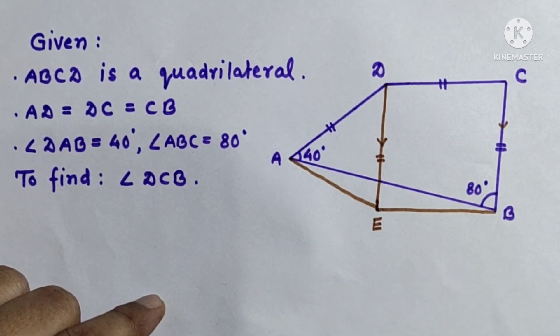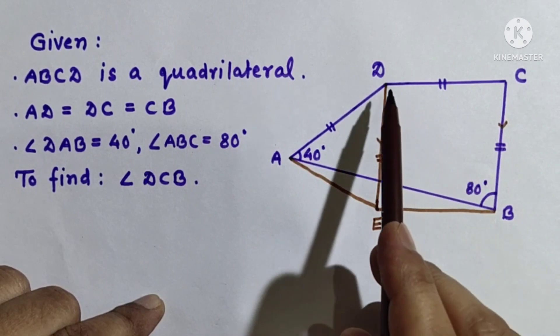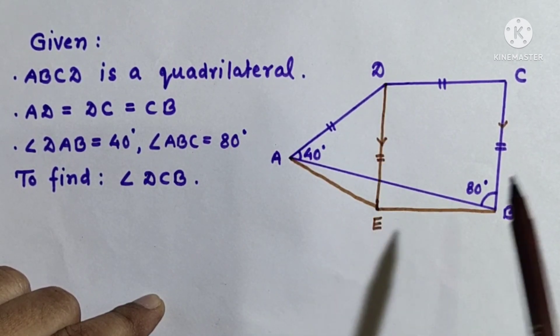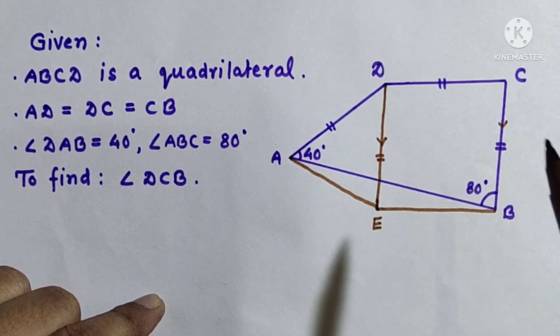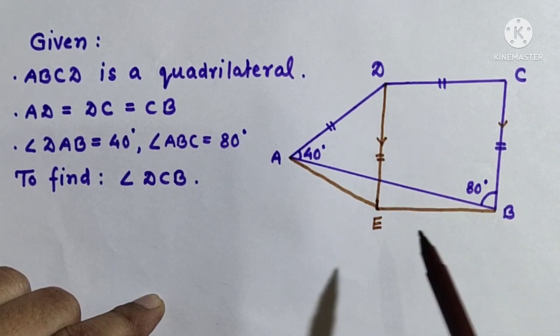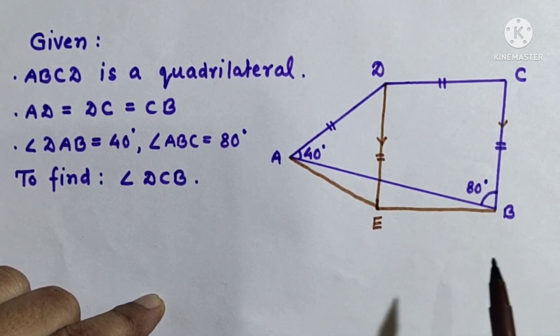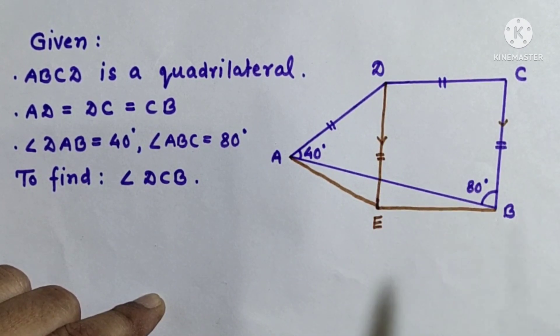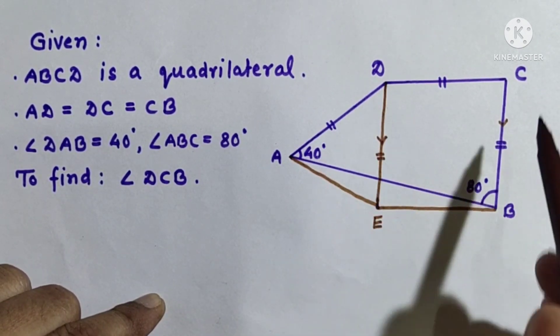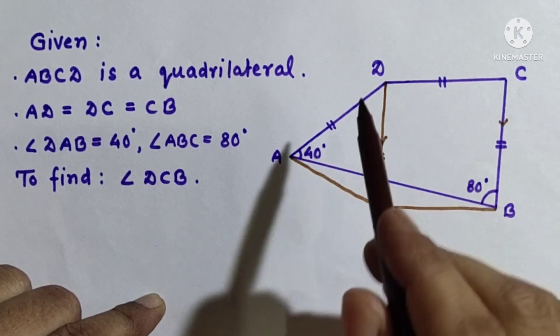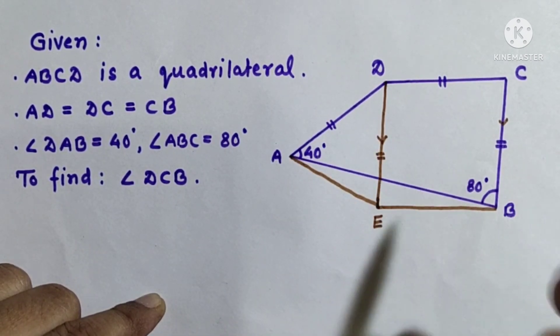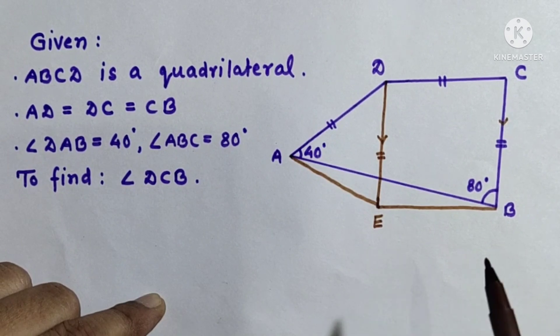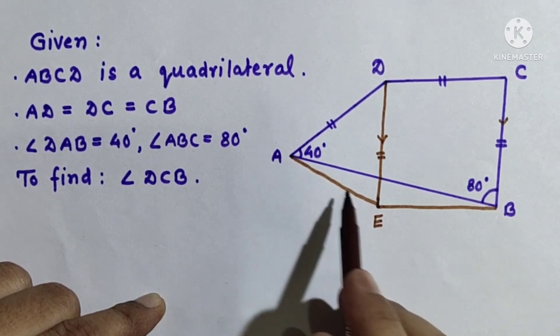We have to construct some things like DE drawn parallel to CB and the length of DE should be equal to length of CB. Since DE and CB are parallel and as well as equal, DEBC should be a parallelogram, and join AE.